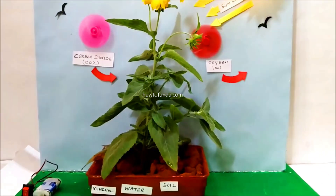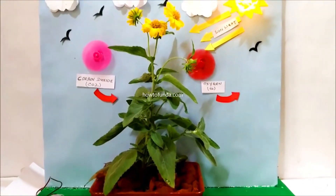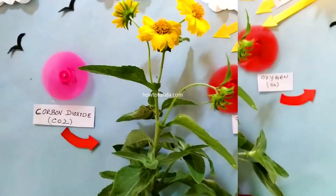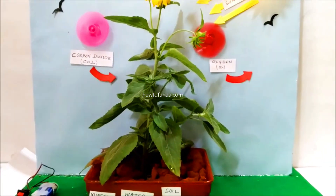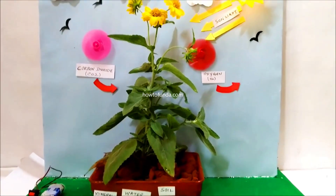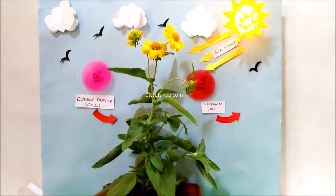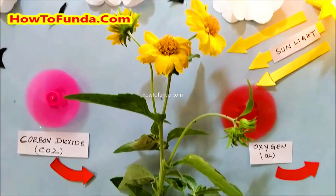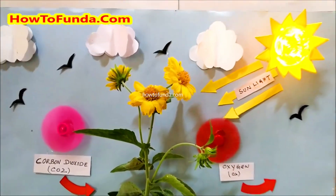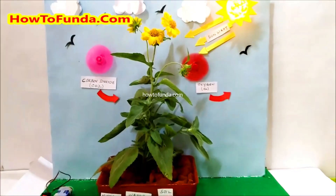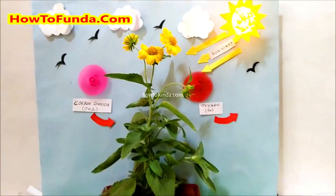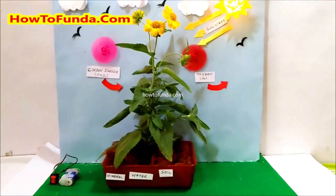The glucose is a food that plants use for energy and growth, and oxygen is released into the air as a by-product. This is how the entire photosynthesis working model works — how the plant generates food for itself and produces oxygen for us by using sunlight, water, and carbon dioxide.